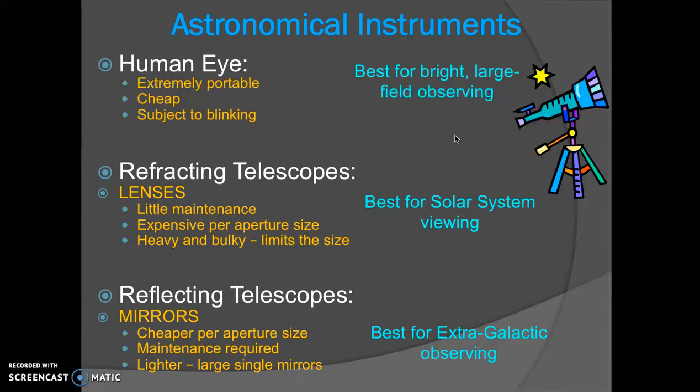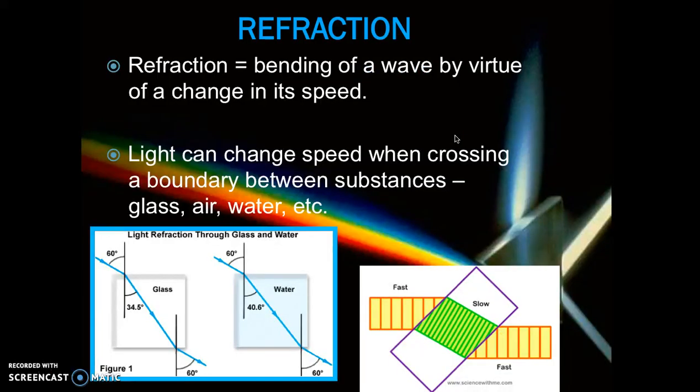So we're going to dive into the differences between refracting and reflecting telescopes. With refraction, you need to understand a little bit about what that means. Refraction is just the bending of a wave by virtue of a speed change. The light travels at the speed of light in a vacuum. But light can change speed when it crosses a boundary between two substances, meaning if light enters in glass or air or water, it actually slows down a little bit. And that slowing bends the light. Notice that these images here show light moving through glass versus water, and it bends at different degrees. This is going to be useful for astronomy because we can use lenses to bend the light, to focus the light for us to see it.